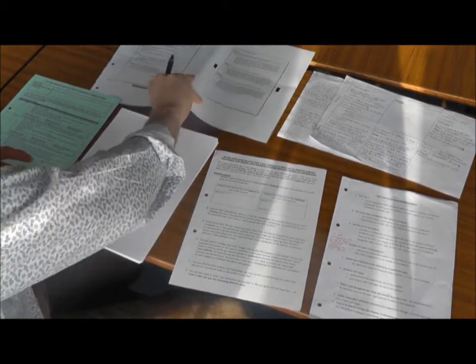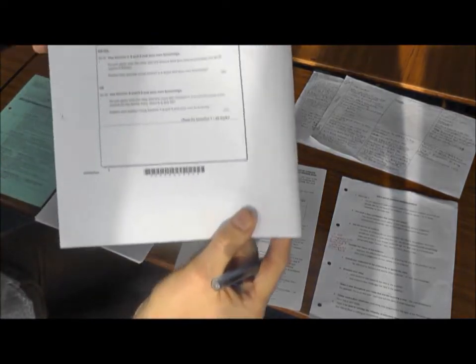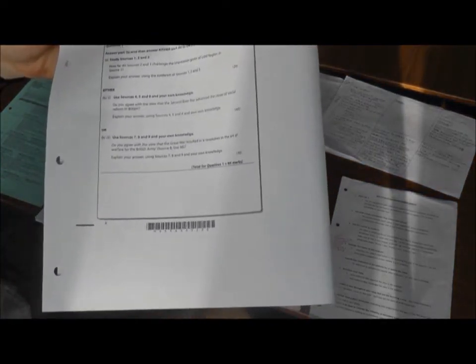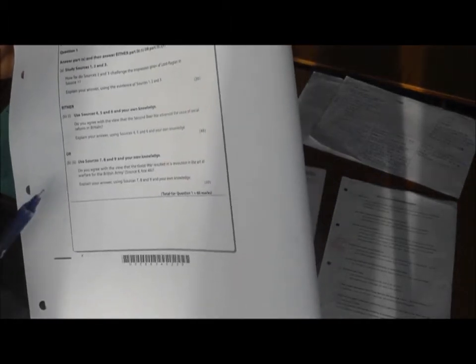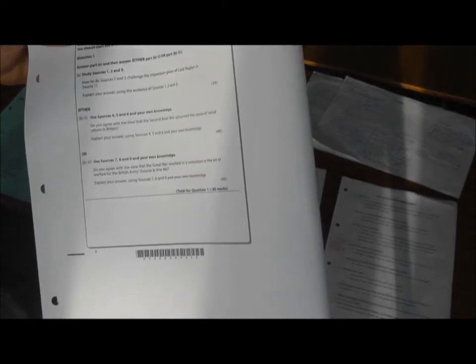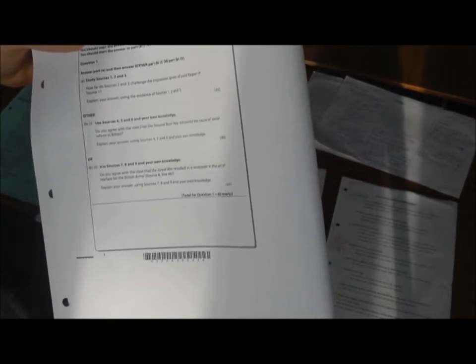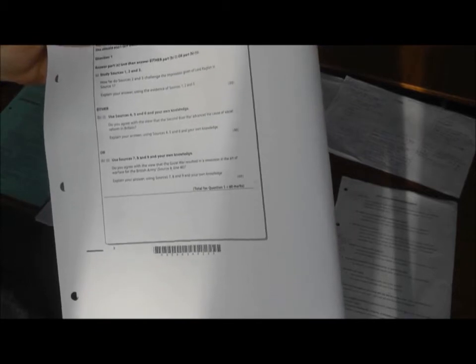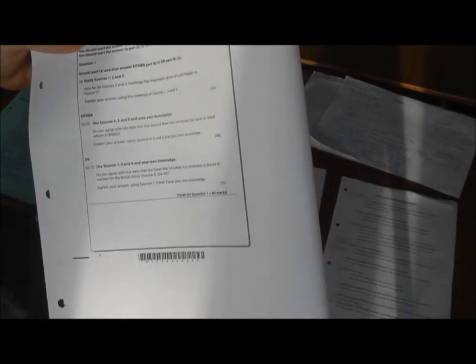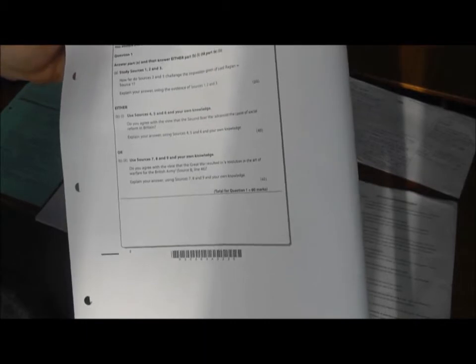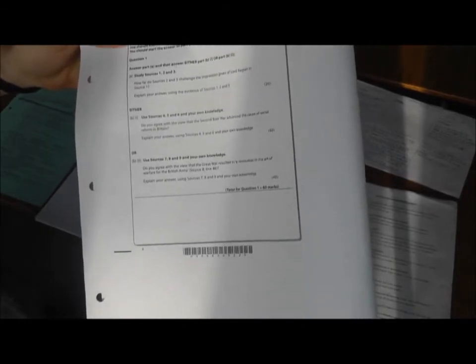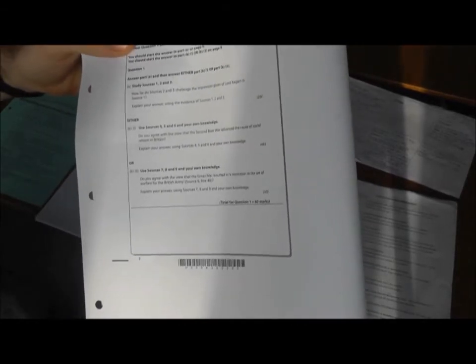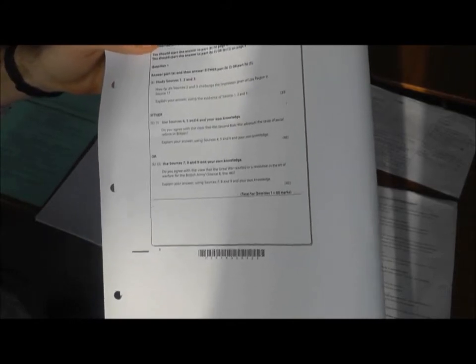What you have with these Unit 2 Part B questions is they always ask you, this is the one you did recently about Revolution in the Art of Warfare, they always ask do you agree with a view. In this case the question was do you agree with the view that the Great War resulted in a revolution in the art of warfare for the British Army, and that's a direct quote from one of the sources. You always have to explain your answer using the sources that are provided and your own knowledge.